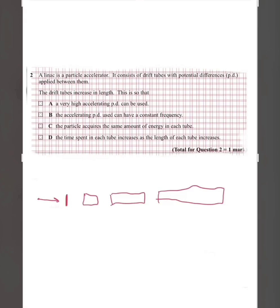Question three: a linac is a particle accelerator consisting of drift tubes with a potential difference applied between them. The drift tubes increase in length. In the linac, an electron passes through a series of tubes of increasing length and is accelerated by an electric field. The polarity of the tube changes as the electron enters, so it gets accelerated. If the polarity does not change at the right time, the electron may get repelled. The rate at which the PD changes stays the same.